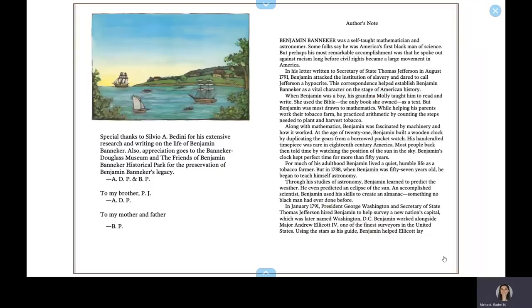Benjamin Banneker was a self-taught mathematician and astronomer. Some folks say he was America's first black man of science, but perhaps his most remarkable accomplishment was the fact that he spoke out against racism long before civil rights became a large movement in America. In his letter written to Secretary of State Thomas Jefferson in August 1791, Benjamin attacked the institution of slavery and dared to call Jefferson a hypocrite. This correspondence helped establish Benjamin Banneker as a vital character on the stage of American history.